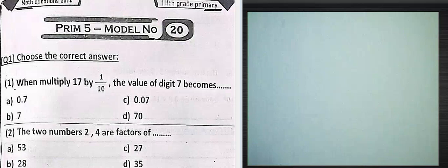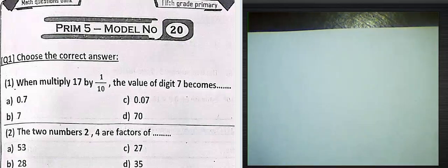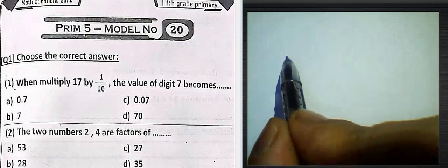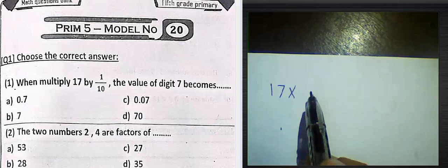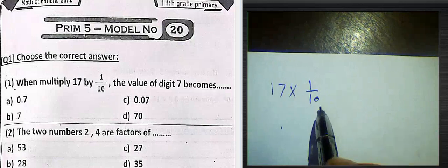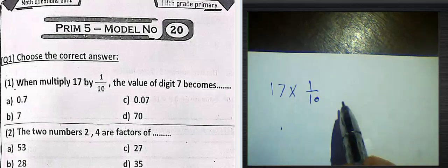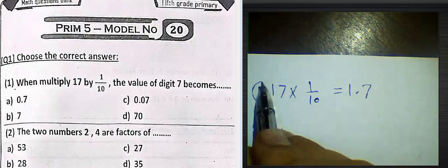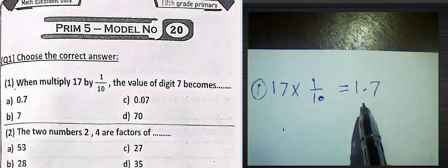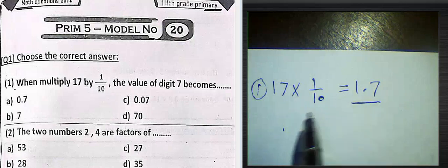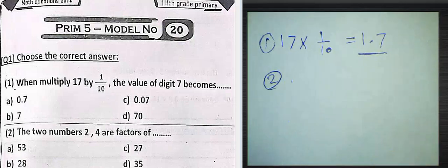Hello my students, now we will complete our models from math questions. Question number one: choose the correct answer. We multiply 17 by 1 over 10. 17 multiply 1 over 10, the value of digit 7 becomes 1.7, because the point must be after one digit.